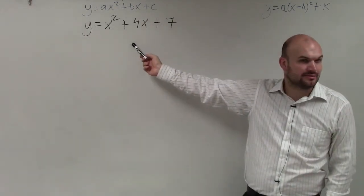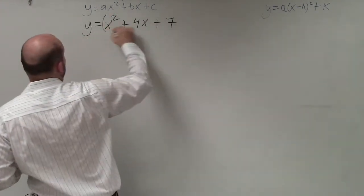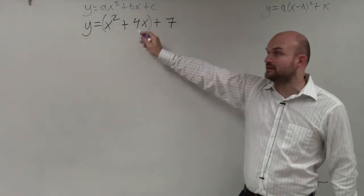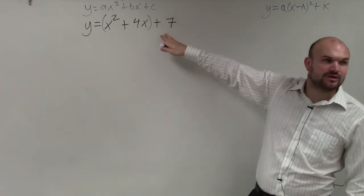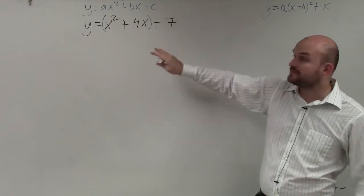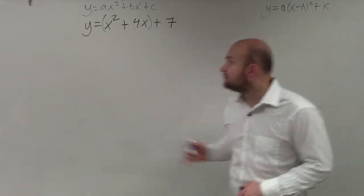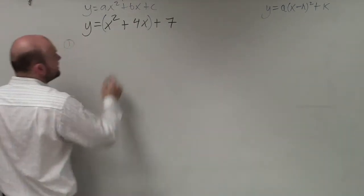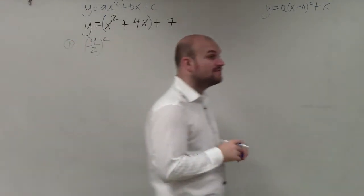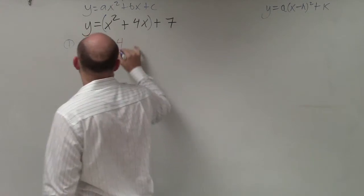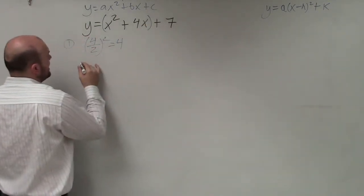This is not a perfect square trinomial, so we need to create one. I'm going to take the first two terms and create a perfect square trinomial inside parentheses. Step number one: put parentheses around the first two terms. Step two: take your middle term, divide it by 2, and then square it. So I take 4, divide by 2 to get 2, then 2 squared equals 4. Now take the value 4 and add it inside the parentheses, then subtract it outside.